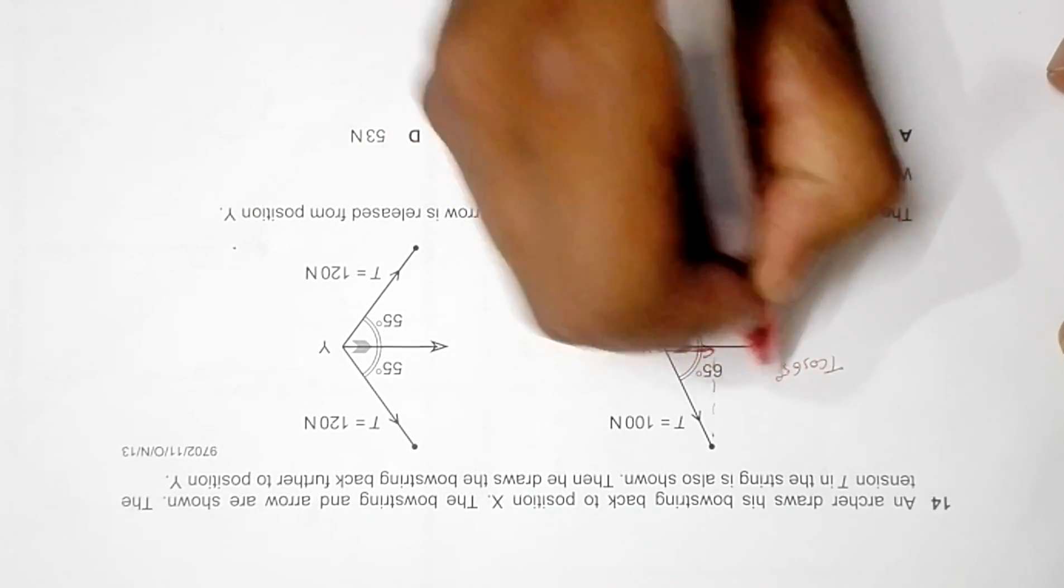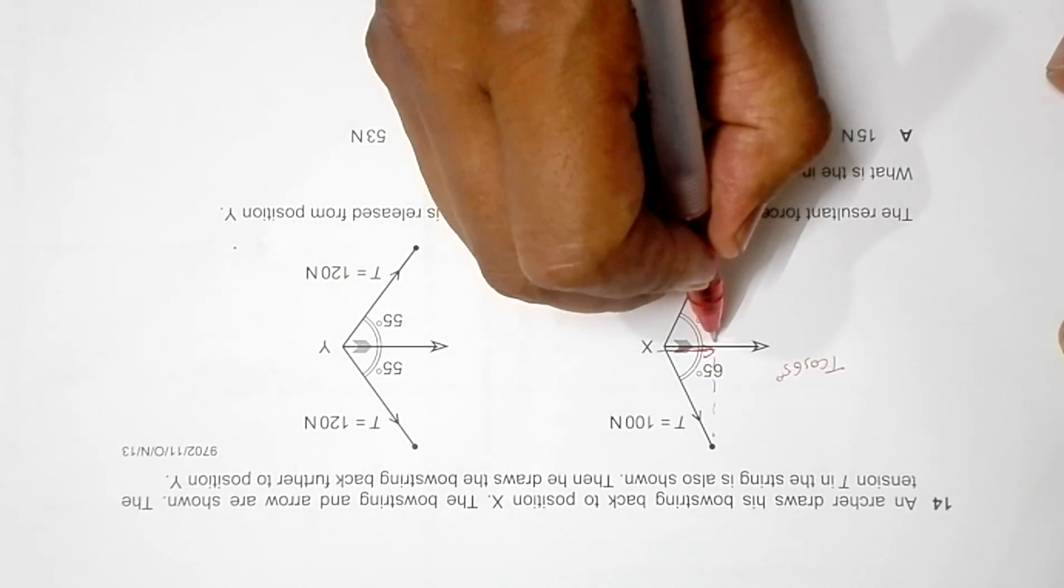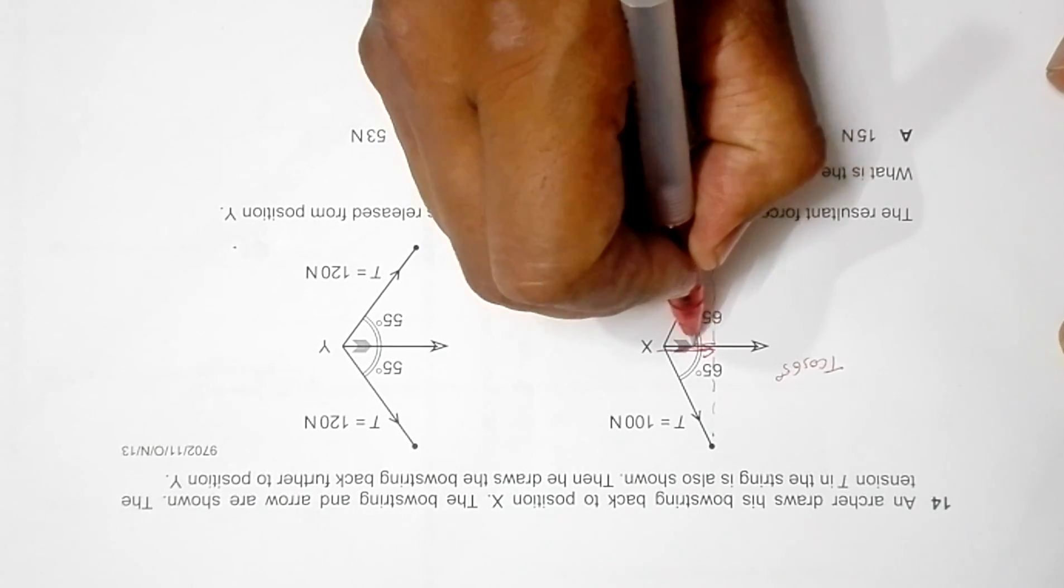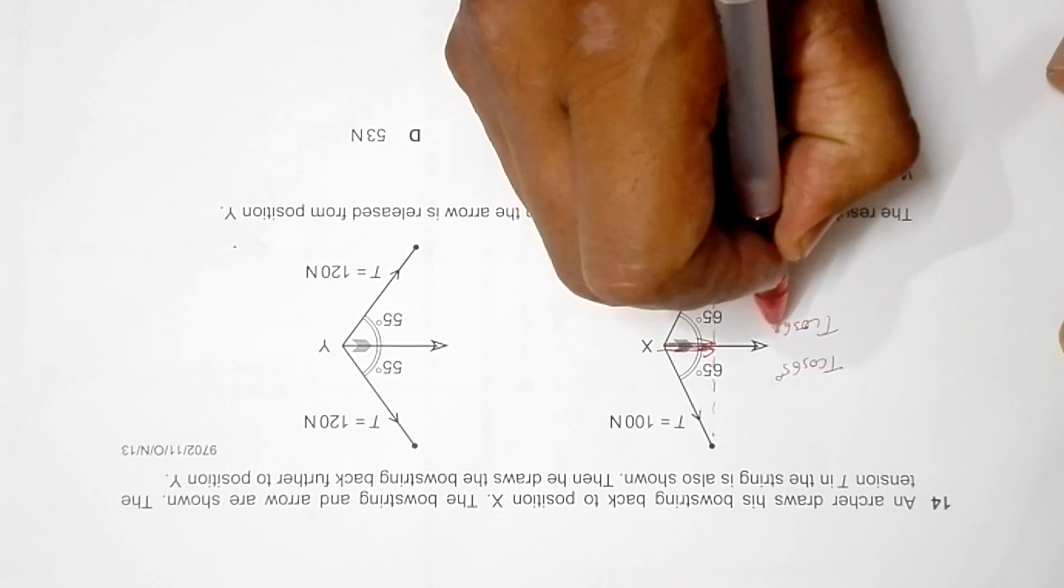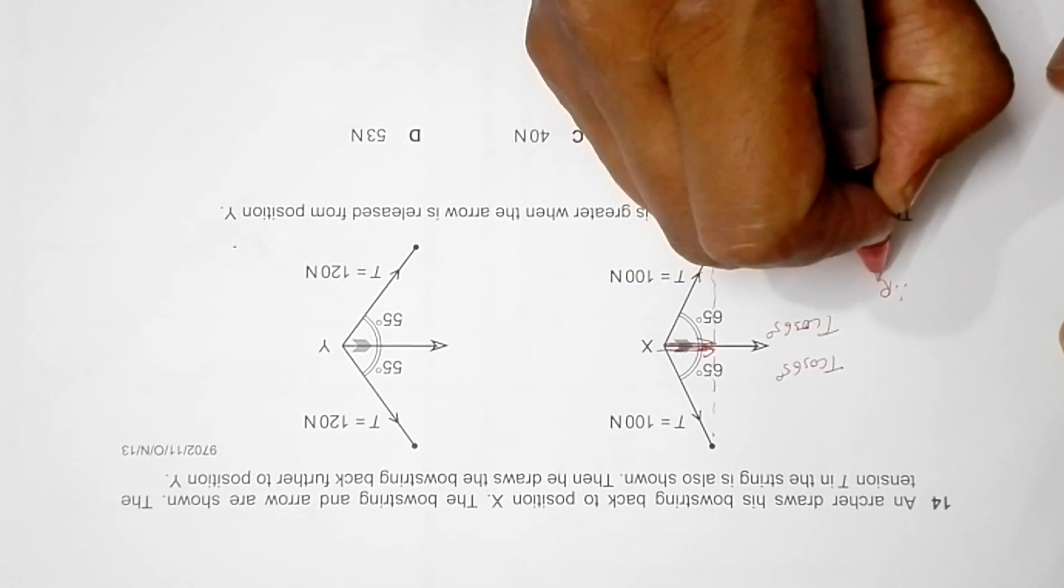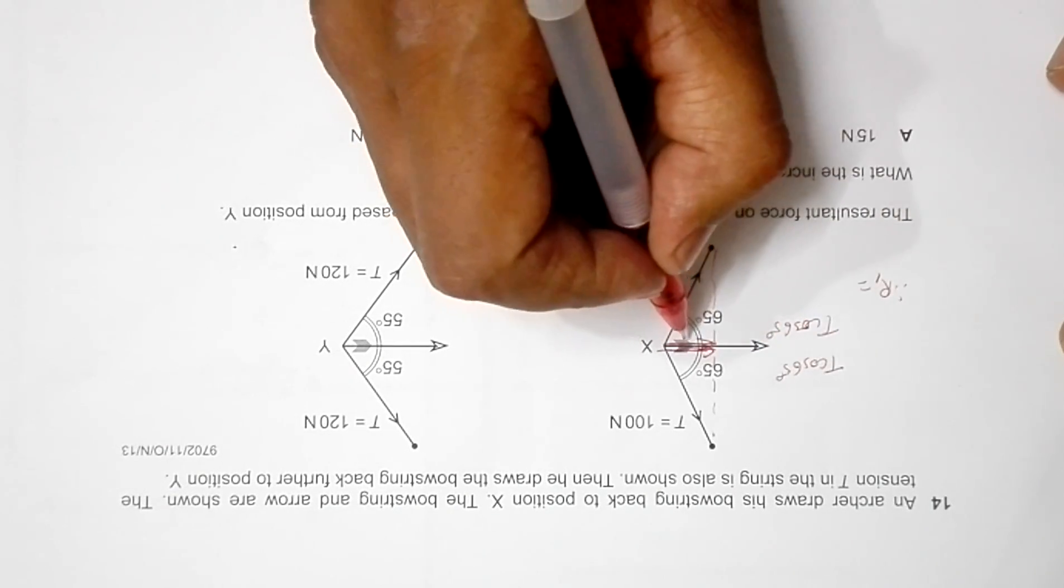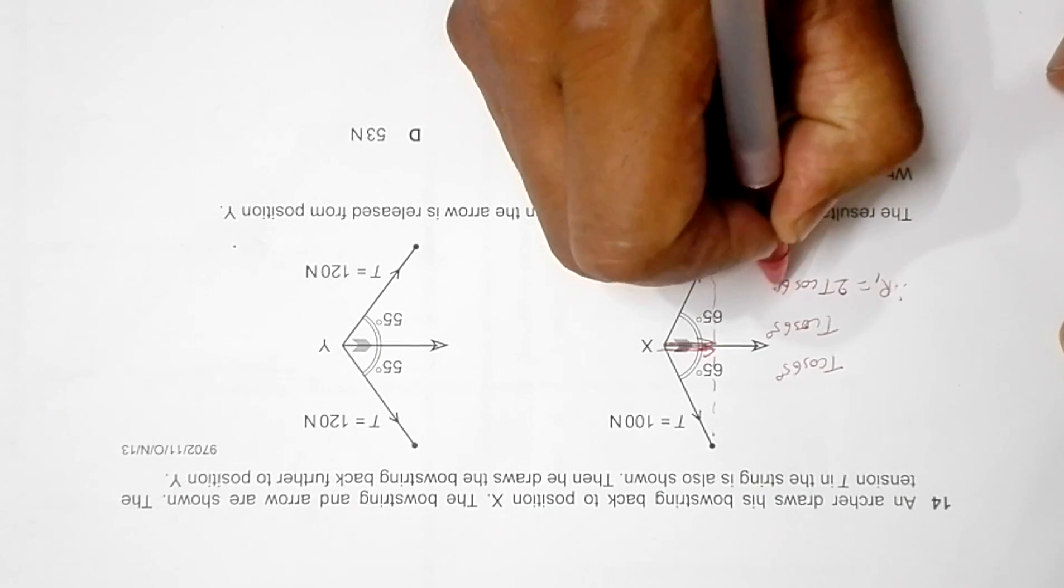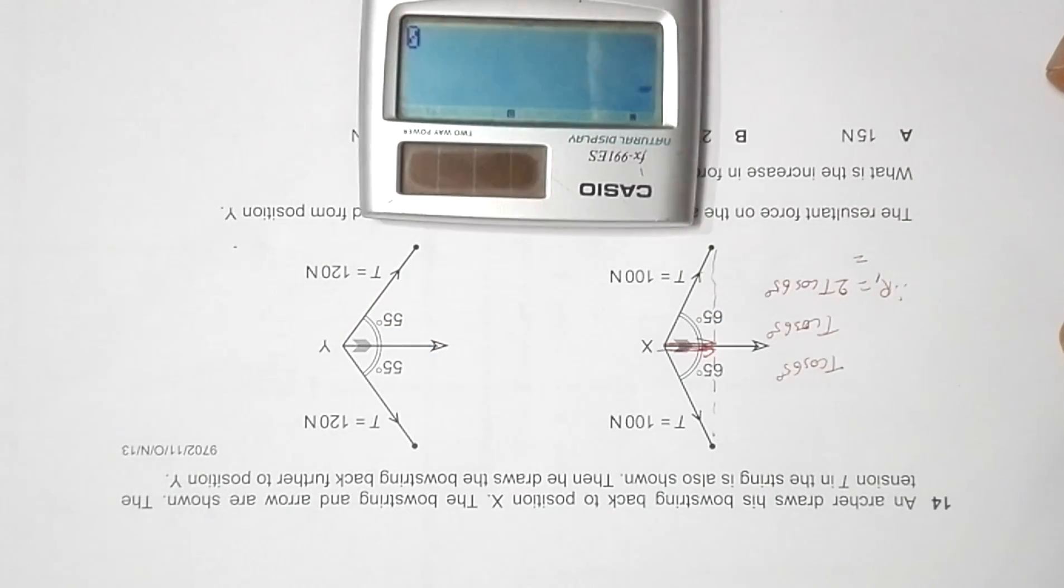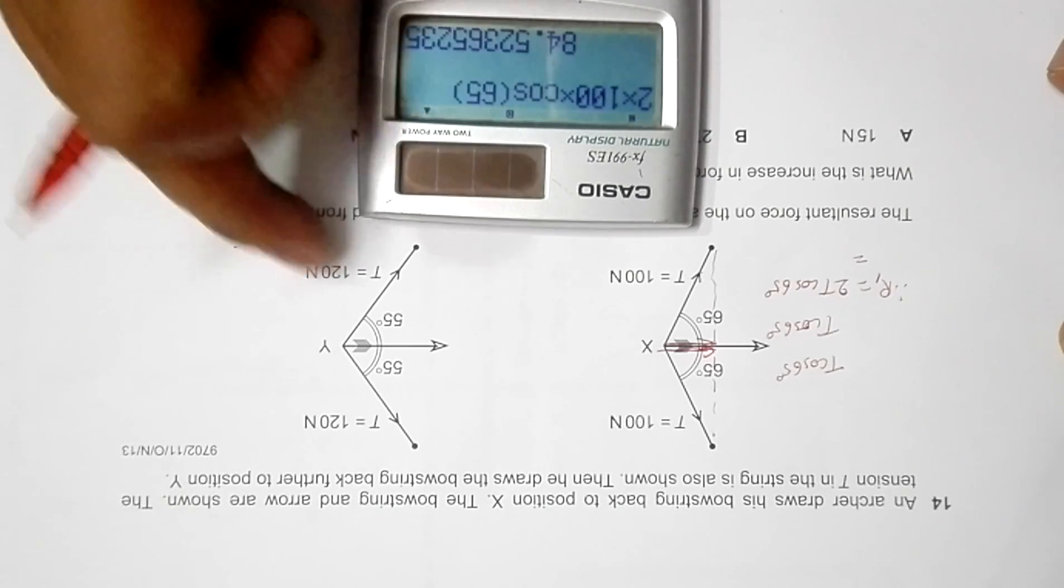Its component here will also be equal to T cos of 65 degrees. So therefore the resultant will be equal to these two will add up since they are in the same direction. There will be 2T cos 65 degrees. So its value will be equal to 2 times 100, T equals 100, into cos of 65 degrees, which equals 84.5 Newton.